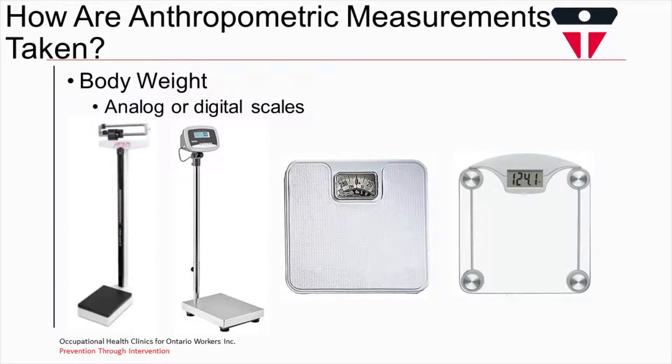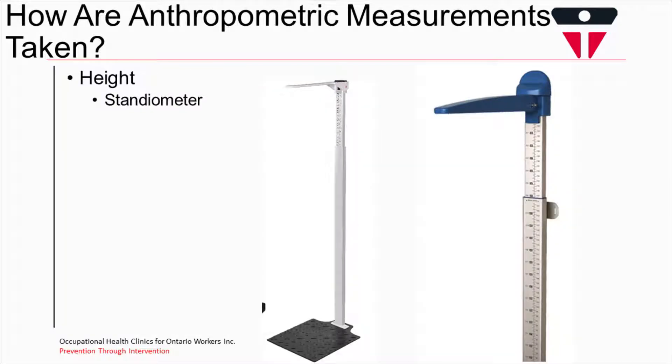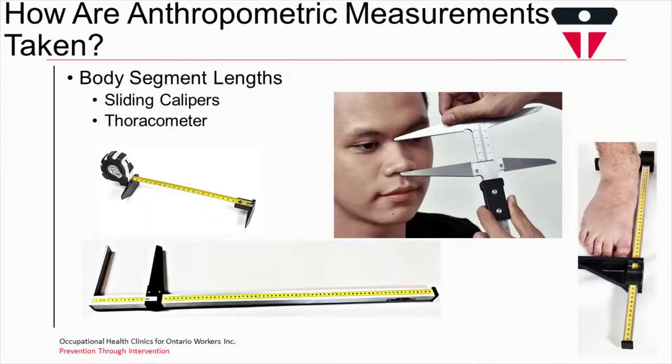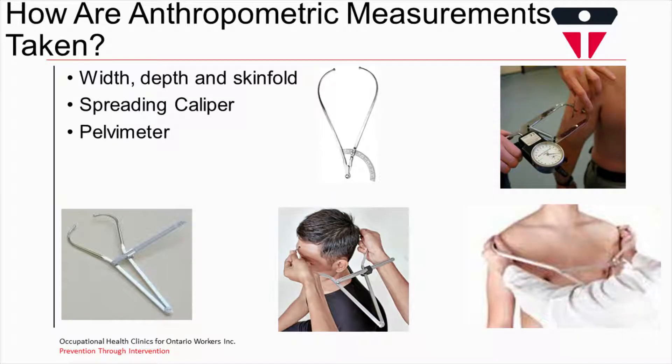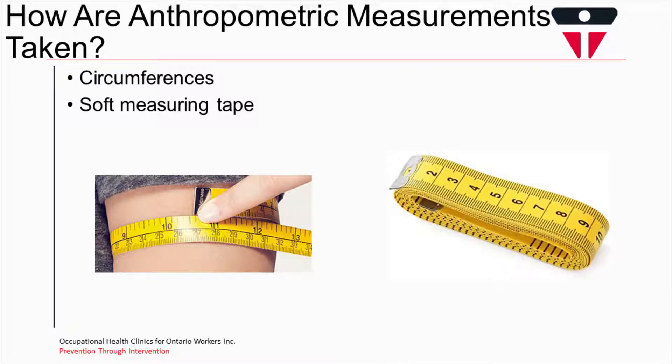Body weight, of course, can be taken via an analog or digital scale. Height is measured normally with a stadiometer. Body segments are normally measured either with a sliding caliper or a tarasometer. Width, depth, skin folds are measured with a spreading caliper or a pelvic meter. Circumference are measured with soft measuring tapes.